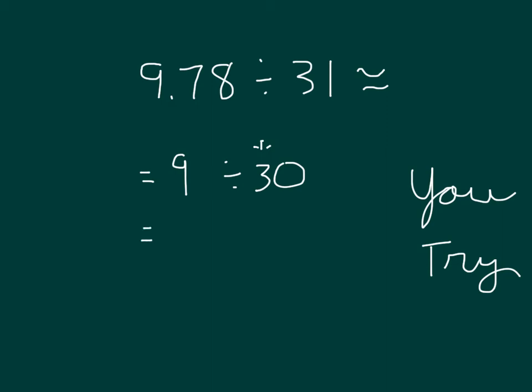Which is equal to 9 divided by 3 divided by 10. So our basic fact that is helping us is 9 divided by 3. 9 divided by 3 is 3, and 3 divided by 10 is 3 tenths. Remember to write your answer up here as well. Read that whole equation with me. 9 and 78 hundredths divided by 31 is about 3 tenths.